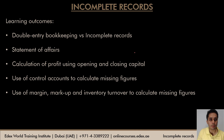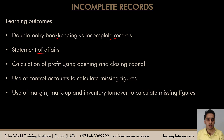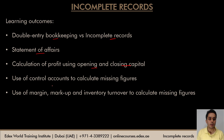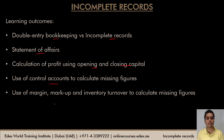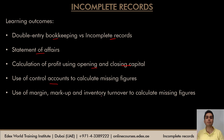We start this video by understanding the difference between double entry bookkeeping and the system of incomplete records. Then we understand the meaning and purpose of the statement of affairs, how to calculate profit using opening and closing capital, and how to use control account formats to calculate credit sales and credit purchases. Then we use specific ratios such as gross profit margin, gross profit markup, and inventory turnover to calculate missing figures.